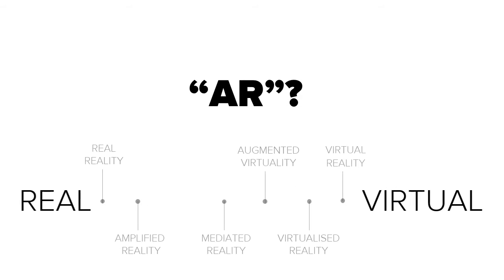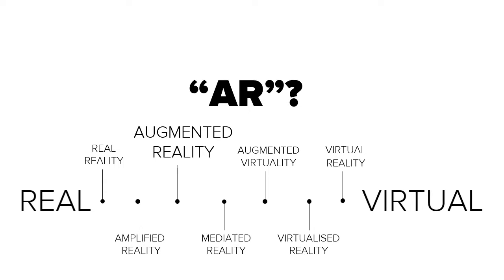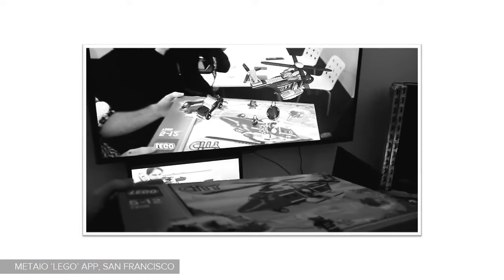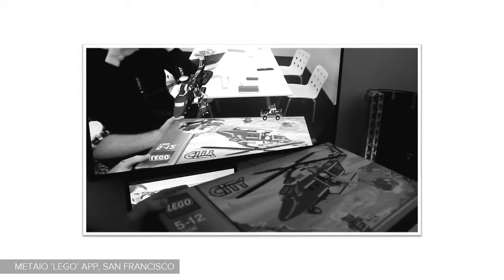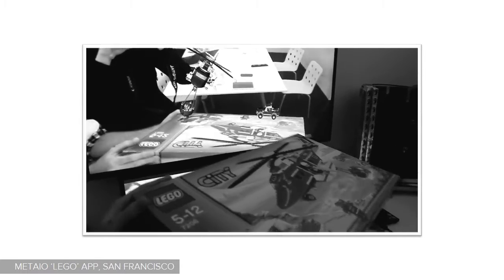What is augmented reality? It's a system that enhances or augments the surroundings of a user with virtual information that is registered in 3D space and seems to co-exist with the real world. Think of it as a sliding scale — the real world is on one side, virtual content is on another, and in between are a bunch of different mixed realities. Augmented reality sits somewhere in between and closer to the real world. AR can blend real world objects with digital content interactively in real time to make them appear to exist in your physical space.